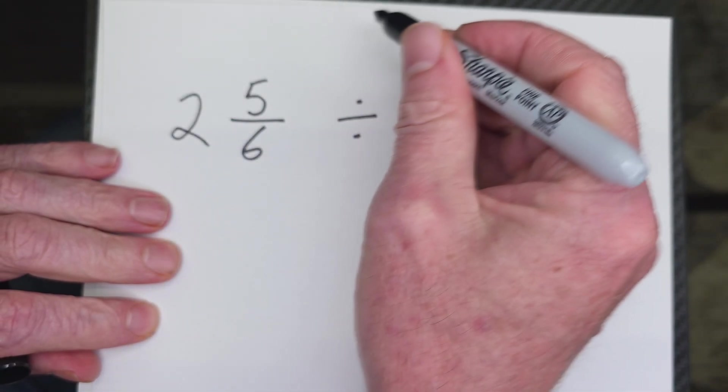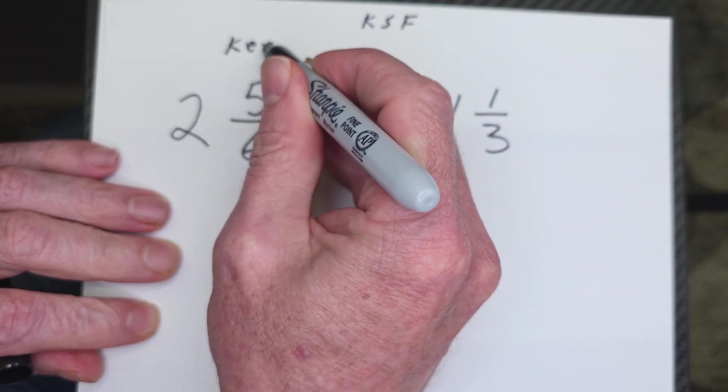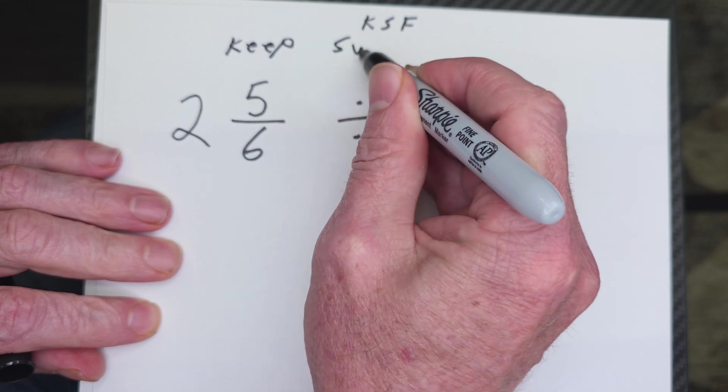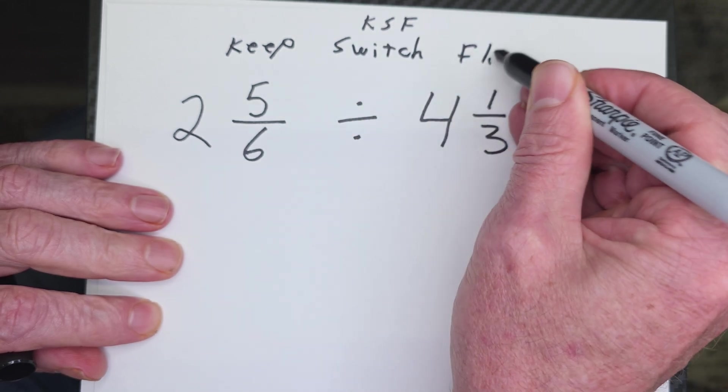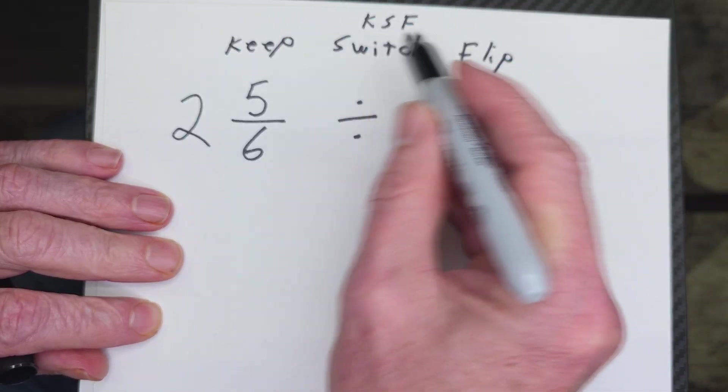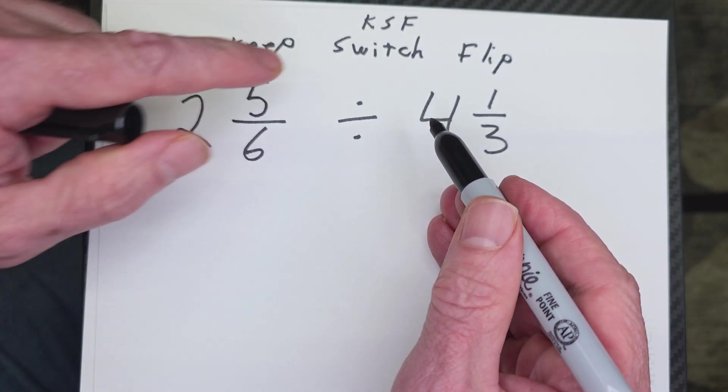And we're going to talk about the KSF. That is keep, switch, and then flip. All right, that's not KFC, Kentucky Fried Chicken. It's KSF. We're going to talk a little bit more about that as we go.